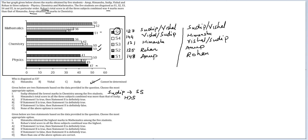Now let's look at the options. If Statement 1 is true and Sudip is S5 (scoring 127), then in Case 1, Himanshu scores 144 — so Statement 2 is true. But in Case 2, if Sudip is S5 scoring 127, Himanshu is only at 121 — so Statement 2 is false. Therefore, if Statement 1 is true, Statement 2 is not definitely true.